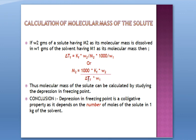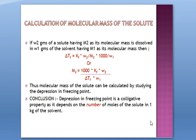In conclusion, depression in freezing point is a colligative property as it depends on the number of moles — on molality — which is the number of moles of solute in one kg of solvent, not the nature of the solute. This is the end of the colligative properties. We'll do numericals for all four colligative properties. The numericals will be uploaded to Google Classroom and we'll work through them together.